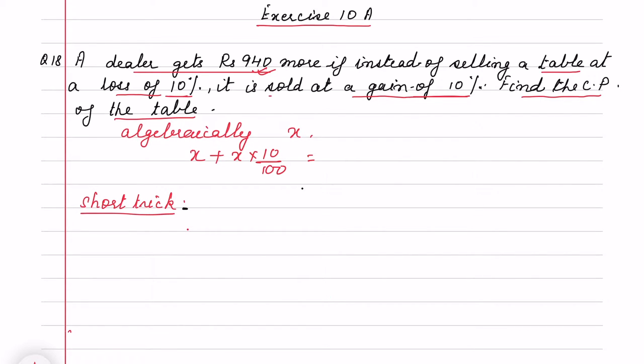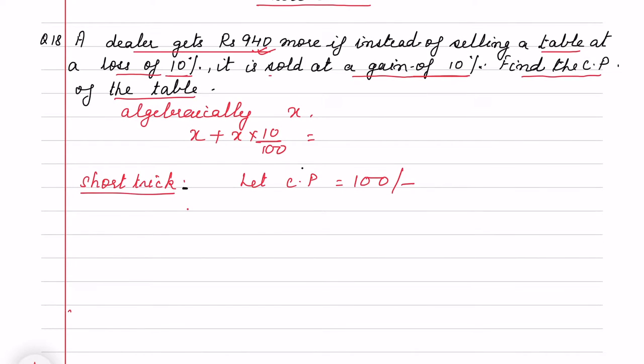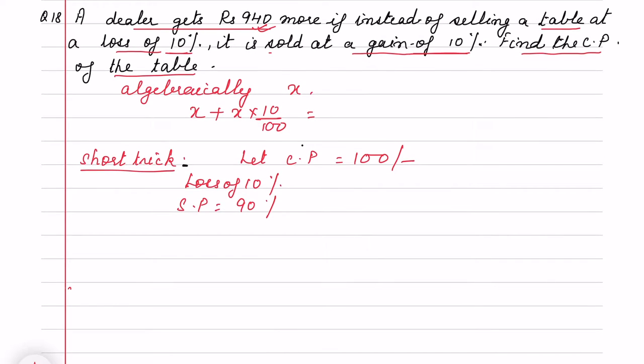Let's see - generally we take the cost price as 100 rupees so that it is easy. When I am selling at a loss of 10%, then the selling price in this case will be 90 rupees.